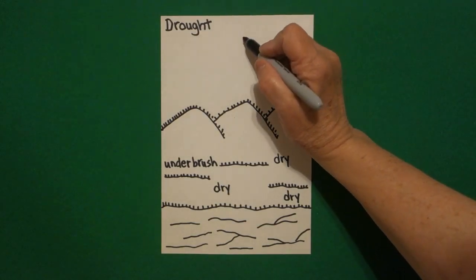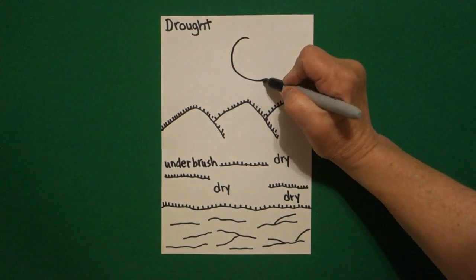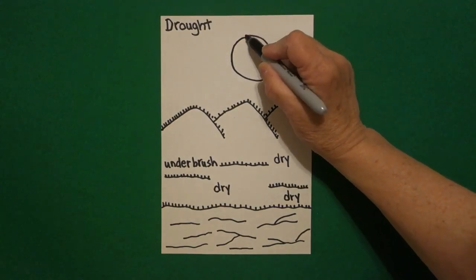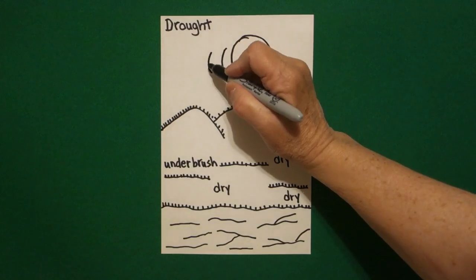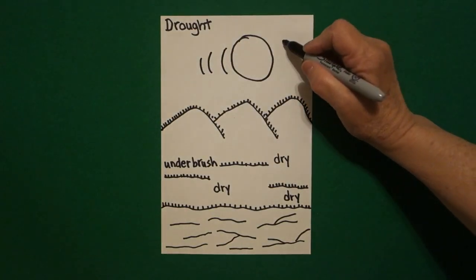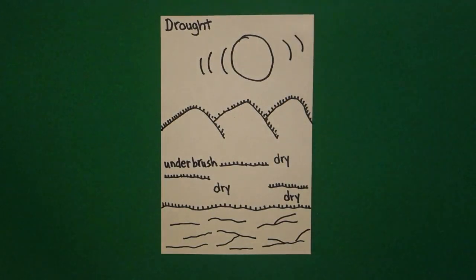Right above, I'm just going to draw a pretty good size sun. Now, when you're in a drought, that sun is hot, so we're going to put some curved lines on the opposite side so that you can see it is really hot.